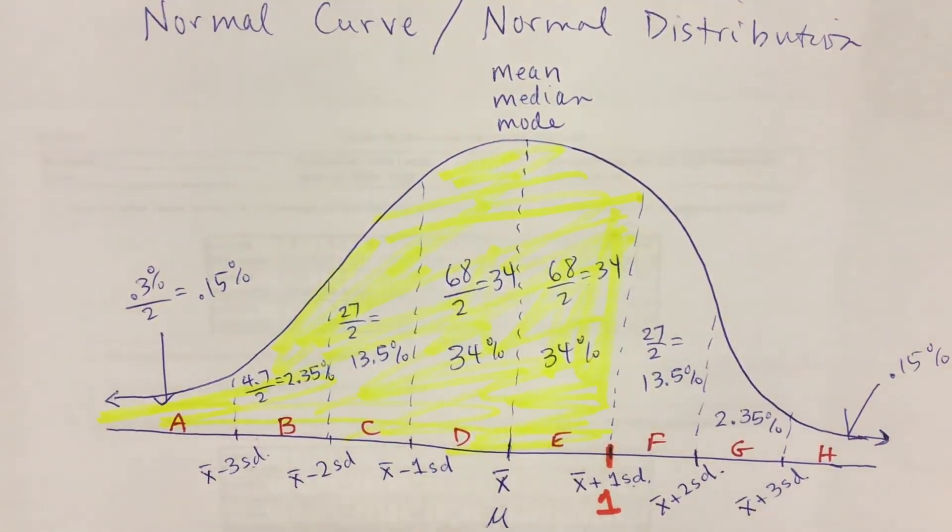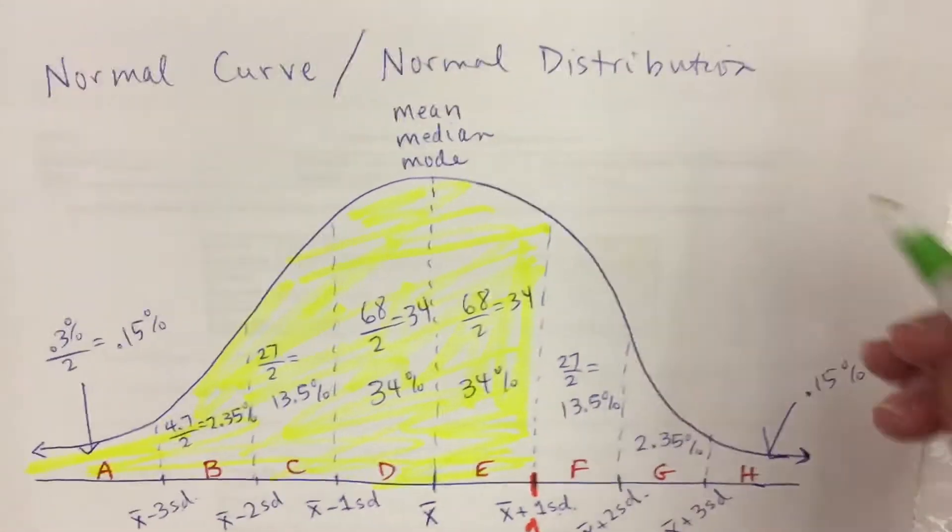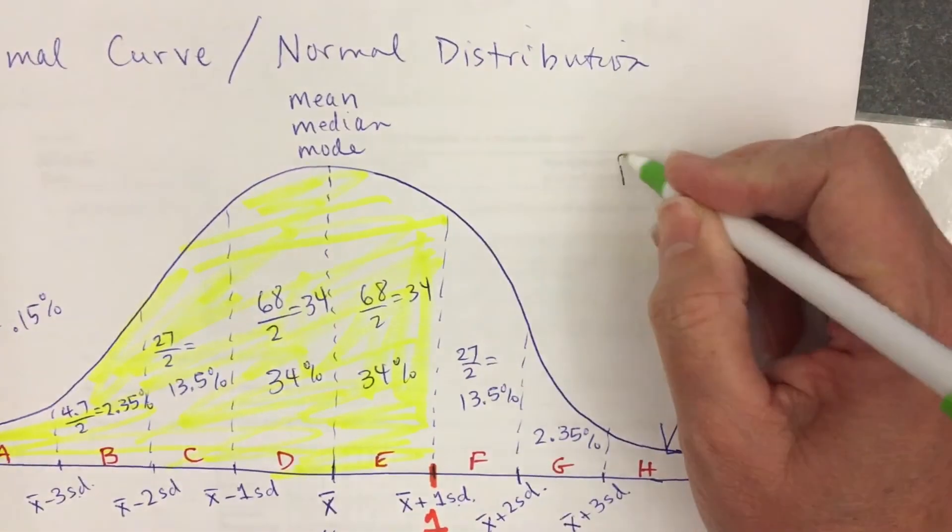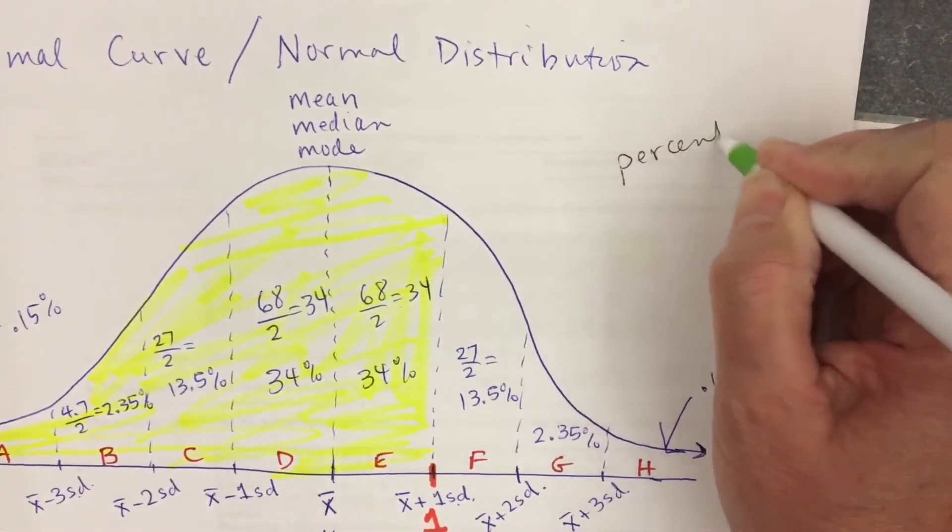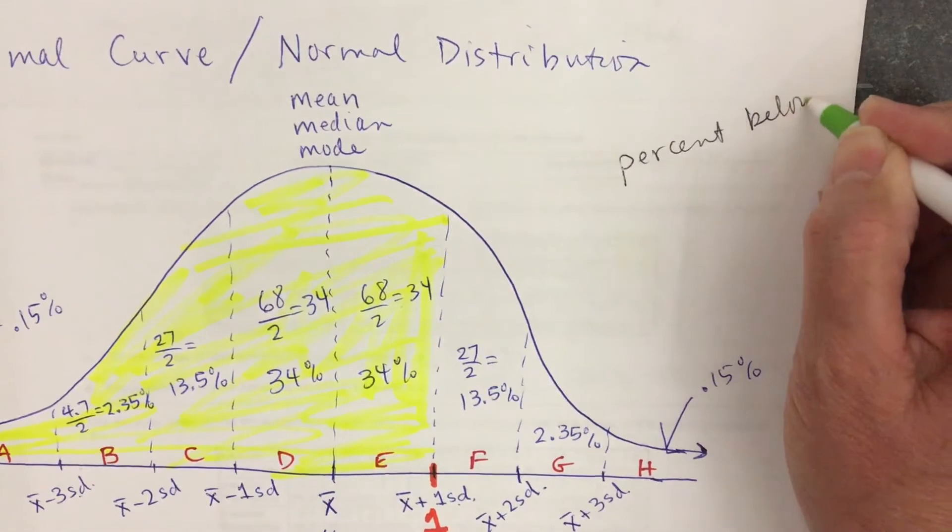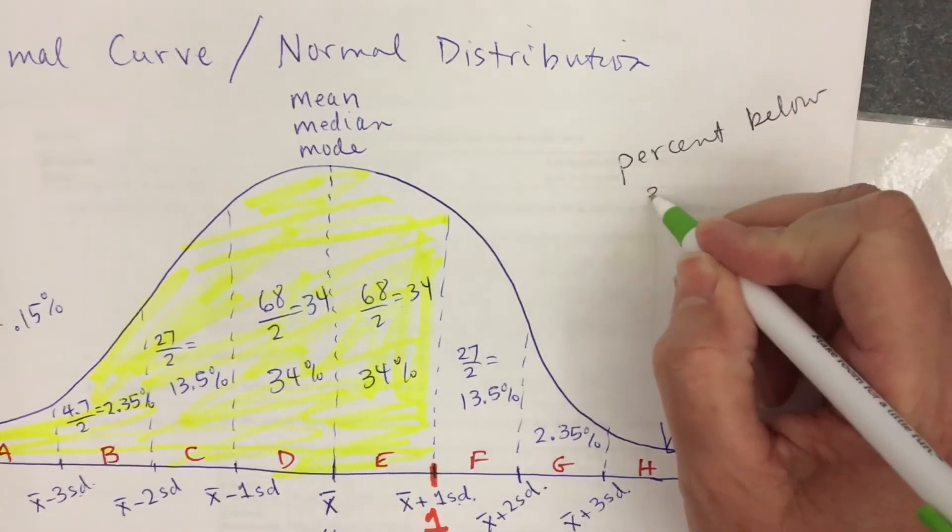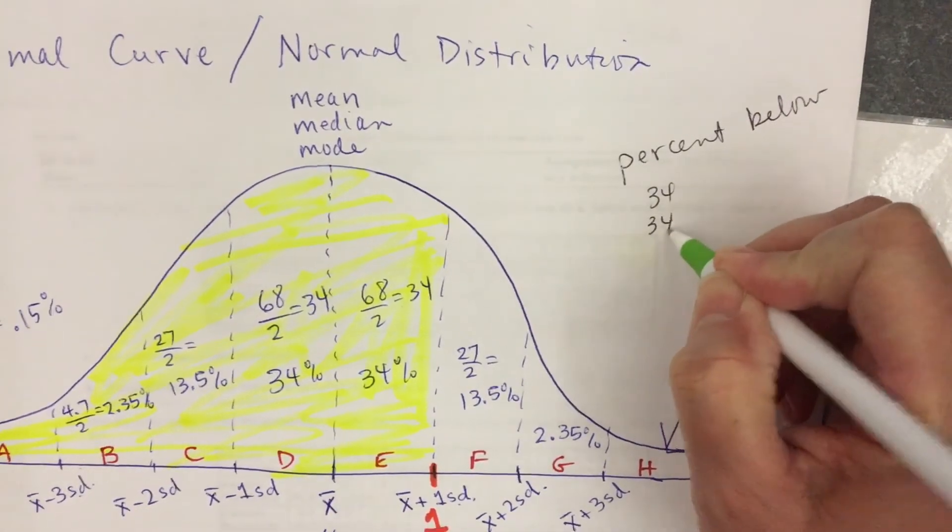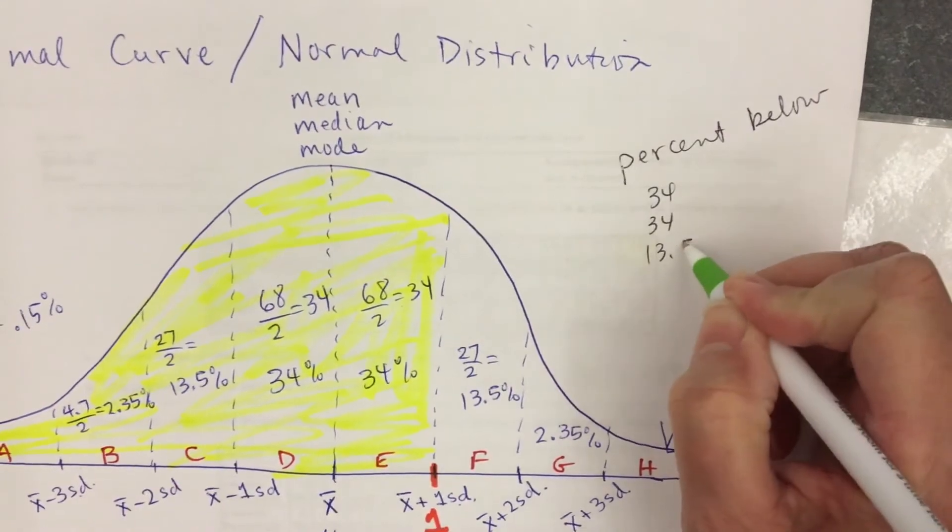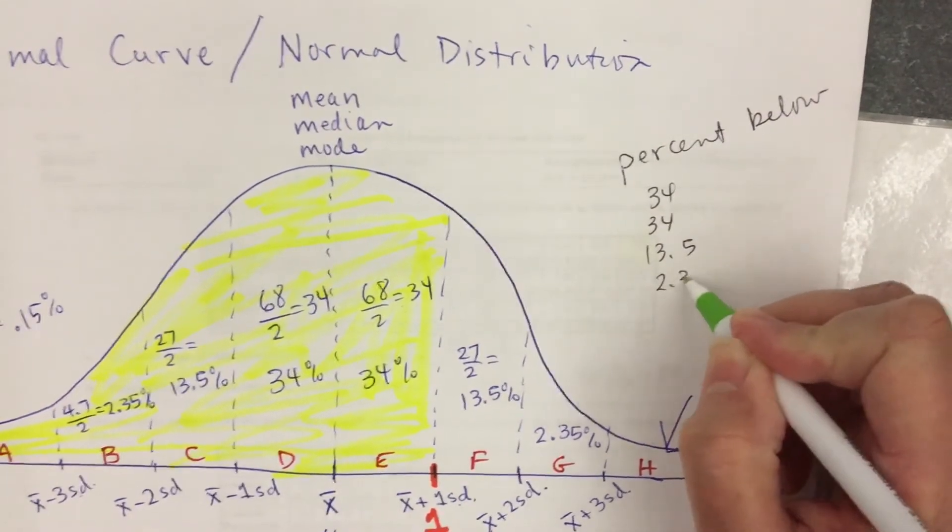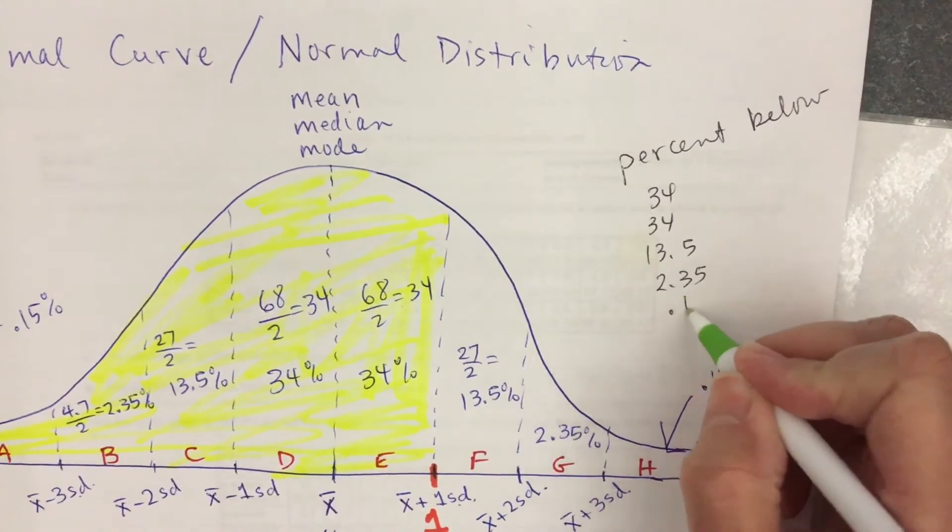If I'm looking at it from this chart, I'm going to write it on the side here, percent below. Let's add 34, plus 34, plus 13.5, plus 2.35, plus 0.15.